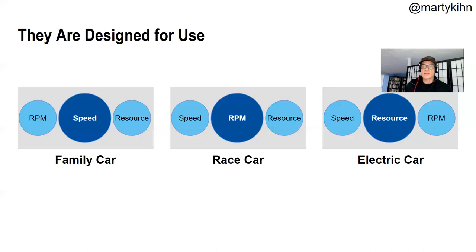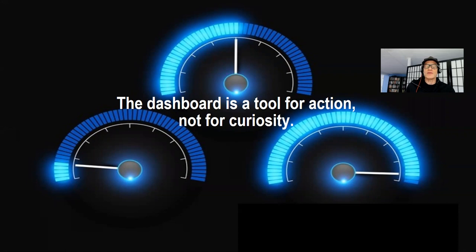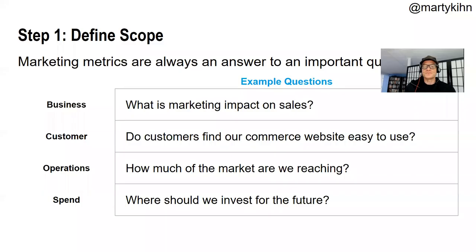The same numbers can be presented differently depending on context. Here we have the same things — RPM, speed, and resource — but presented in very different ways depending on the type of car. In an electric car, what you care about is resource: how much power do you have left? In a family car, you want to make sure you're not speeding. The dashboard is a tool for action, not for curiosity. That would have answered my CMO's complaint — they said I don't know what you're trying to tell me, because I was gearing it toward my own curiosity, wanting to see every metric around that campaign.